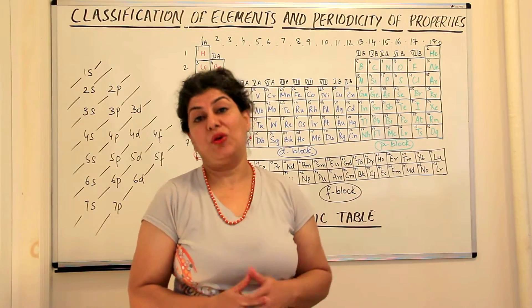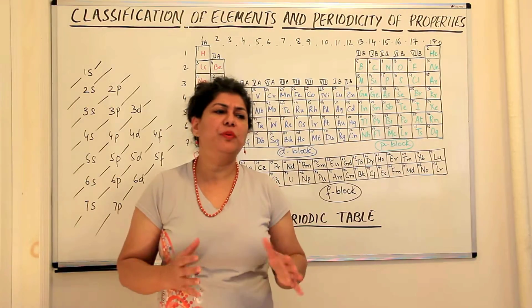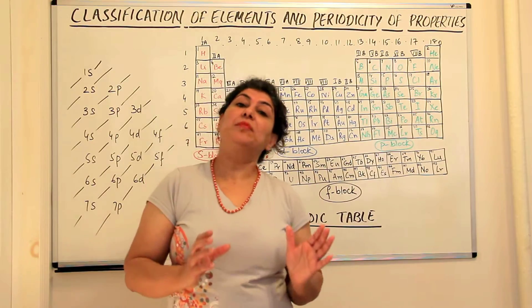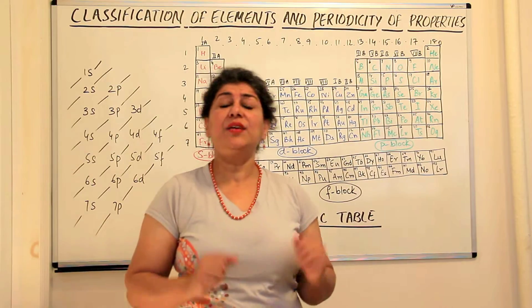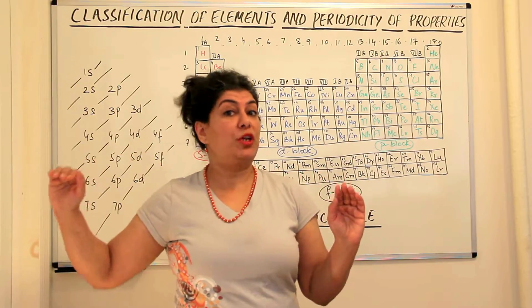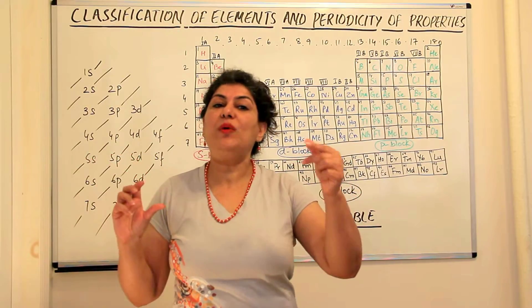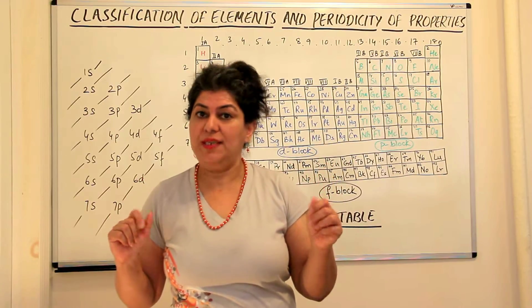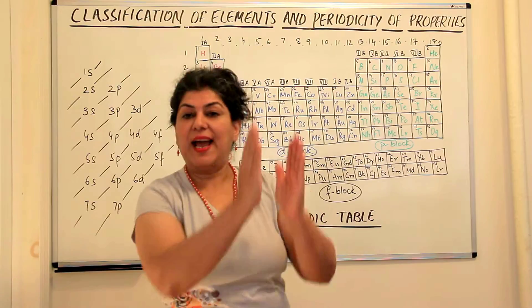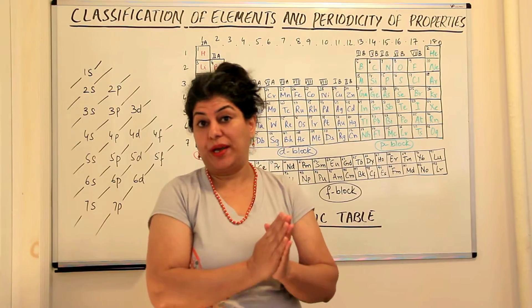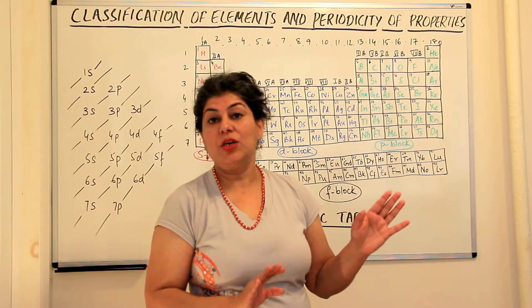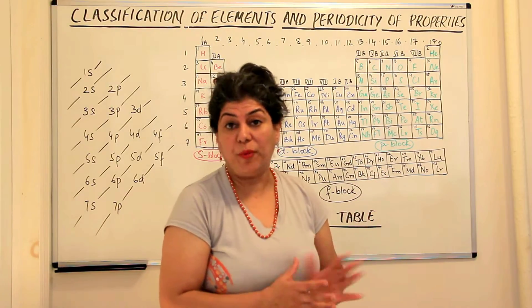So it was Mendeleev who was the first person to include all the then known elements and he classified them logically. He was a genius because although he arranged them according to their increasing atomic masses, where he found two elements similar in their properties, he gave more importance to the similarity in properties and he placed those elements together, assuming that maybe the mass was not calculated properly.